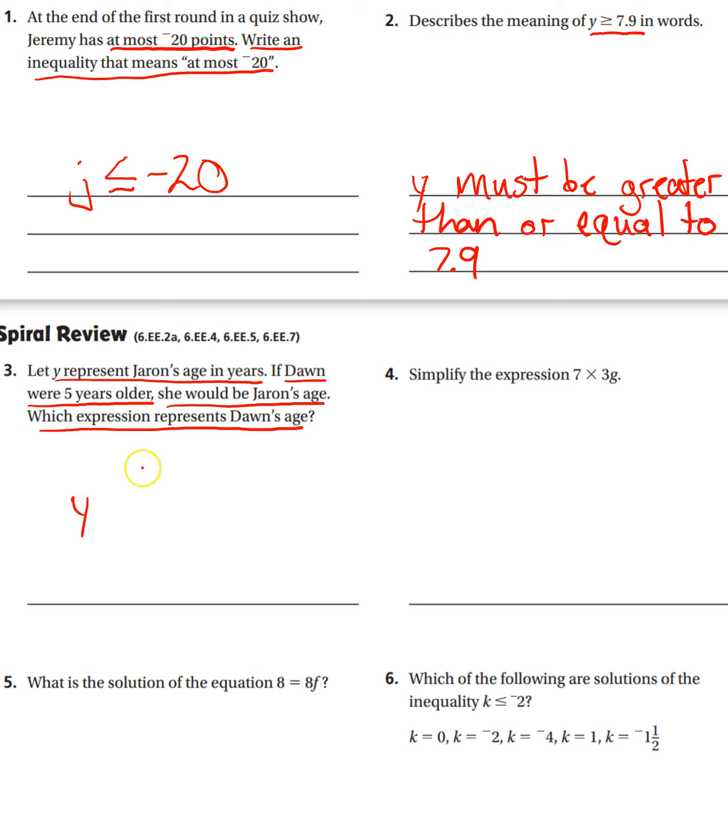We have Y is Jaren's age. Dawn was five years older, so older means we're adding. There's my expression. An expression doesn't have an equal sign, so Y plus 5 would be the expression that represents Dawn's age. She's going to be whatever Jaren is, which we're calling Y, plus five years older than that.